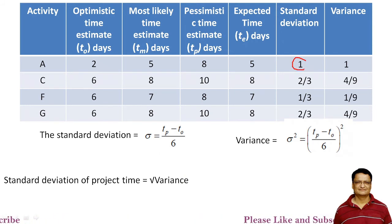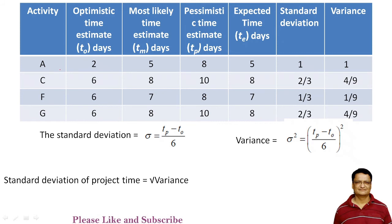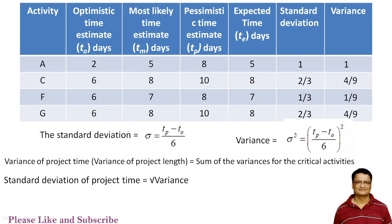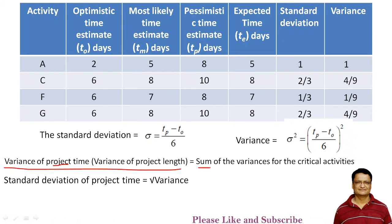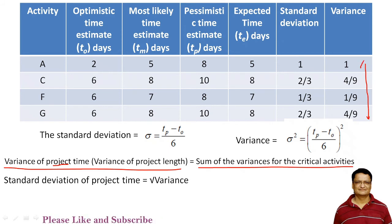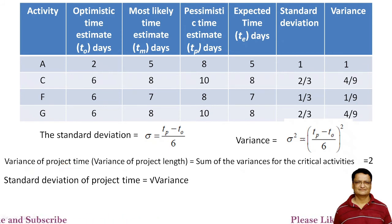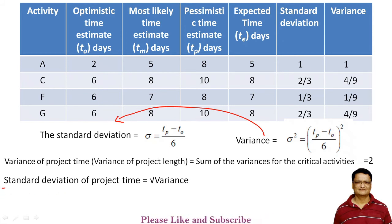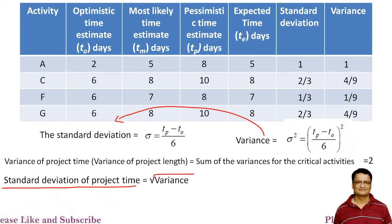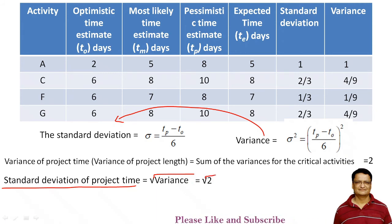These standard deviation and variance values are related to individual activities, but we need to calculate the standard deviation and variance for the complete project. The project variance is the sum of the variances of all critical path activities. Adding all four values gives us a project variance of 2. The standard deviation of the complete project is the square root of this variance, so σ_project = √2.